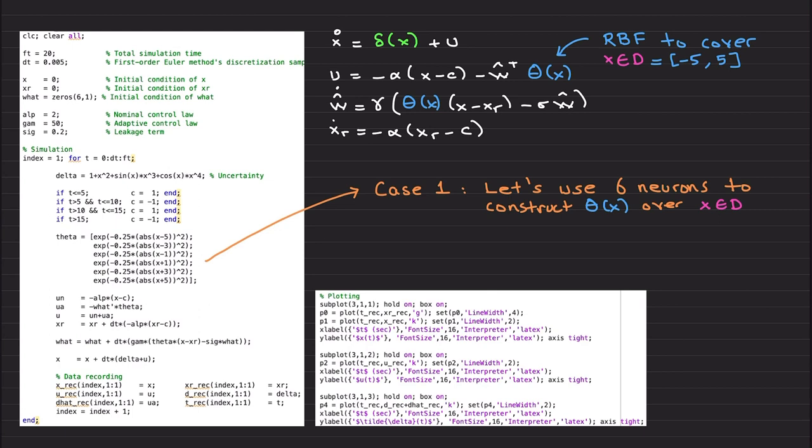The boundedness result that we established in the previous video, similar upper bound on the trajectories of the closed-loop system. Of course, this doesn't depend only on gamma and sigma, it also depends on epsilon of X coming from the radial basis functions.